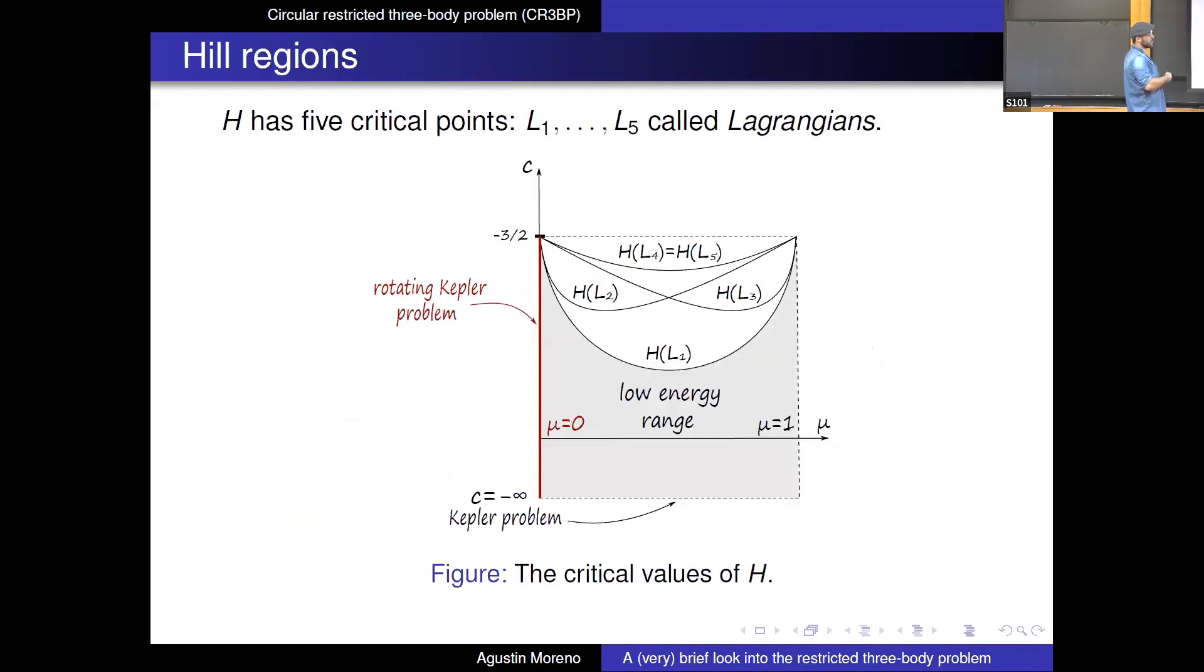So if you do Morse theory with respect to this Hamiltonian, you will actually find that there are precisely five critical points, which are classically called the Lagrangian, so L1 up to L5, order according to increasing value of energy. These were already found by Euler and Lagrange, maybe like 300 years ago.